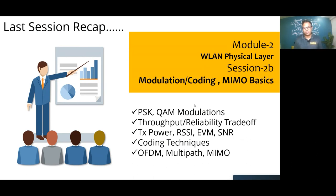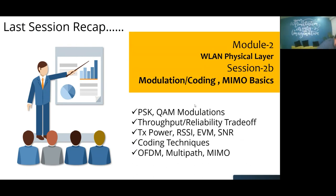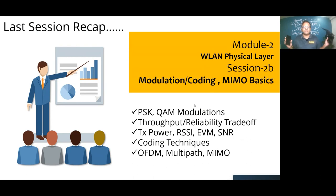In the last session we talked about the various modulation and coding schemes used in Wi-Fi. Phase shift keying and QAM are the two modulation methods primarily used — 16-QAM, 64-QAM, 256-QAM, 1024-QAM, 4096-QAM, and so on. We also discussed the trade-off between throughput and reliability: as we increase to higher order modulation rates, we get better throughput but trade off on connection reliability.